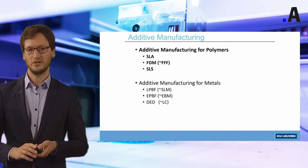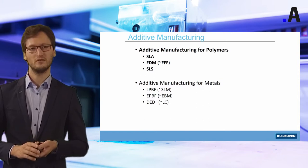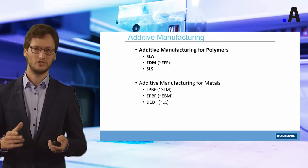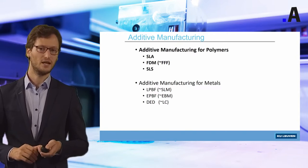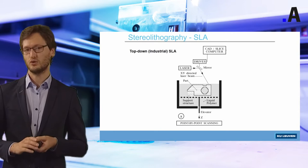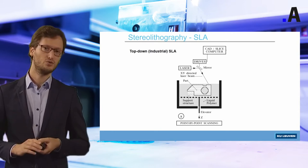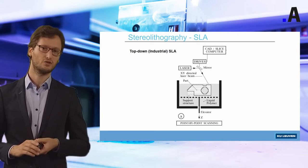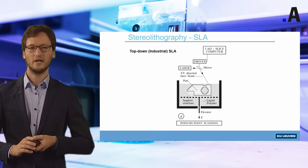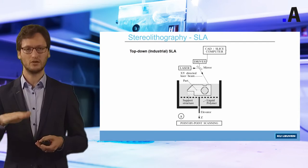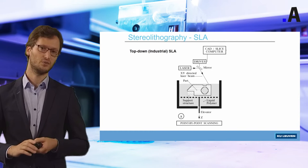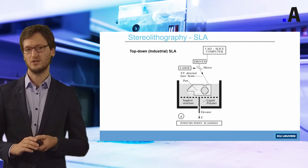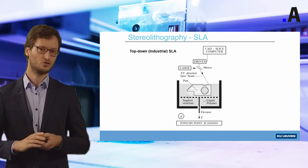Let us start with printing of polymers. Printing of polymers exists already for more than 30 years, and the first printing process available was stereolithography, also called SLA. In stereolithography, we start from a liquid — a photosensitive resin that is put in a vat, as you can see on the graph. Then we use an ultraviolet laser and a scanning mirror that deflects the laser beam onto this liquid resin.